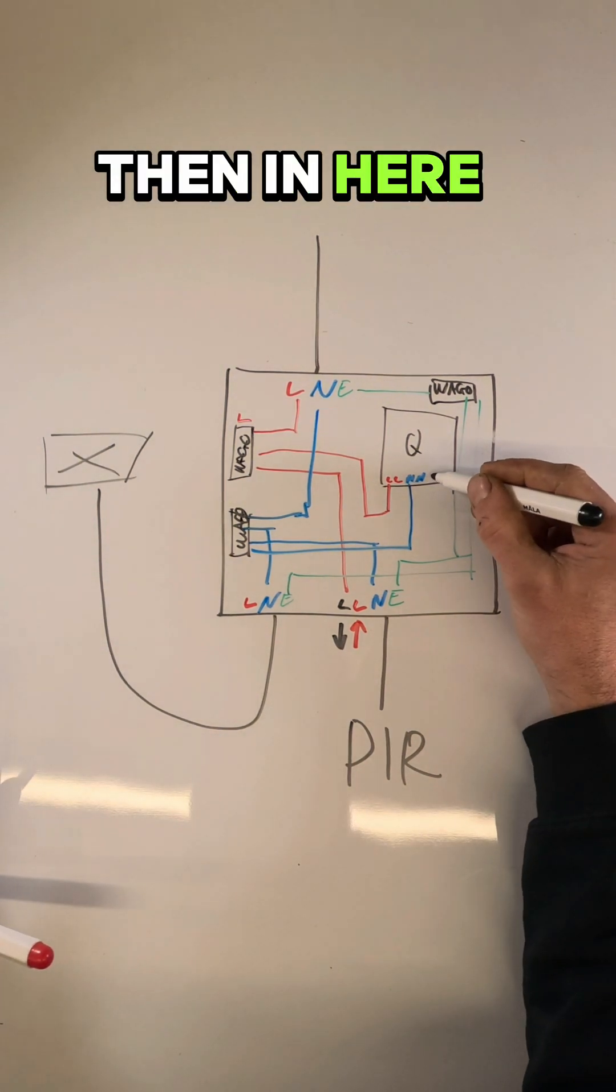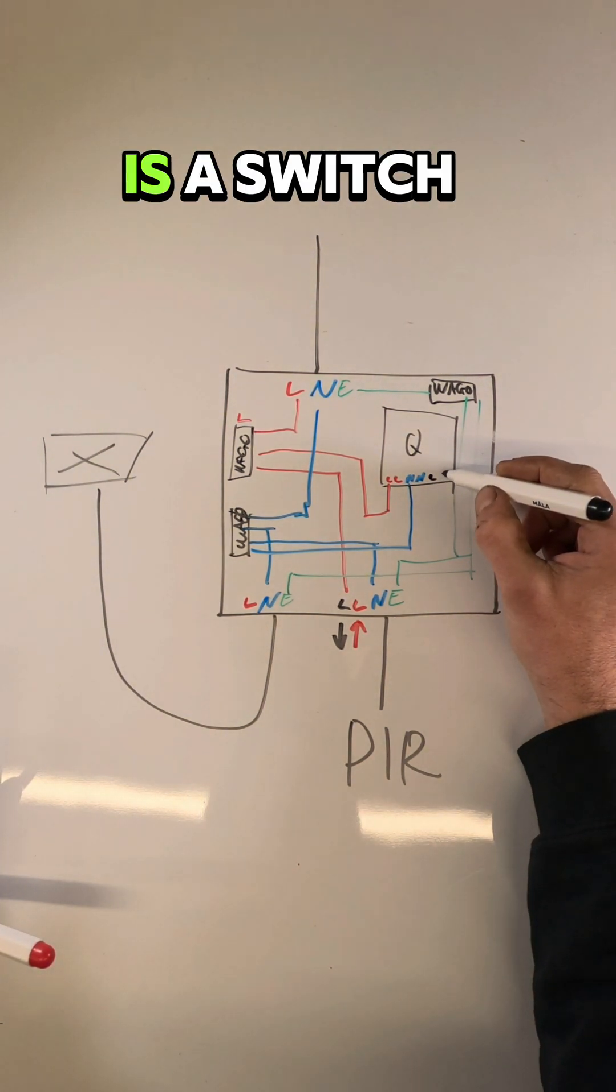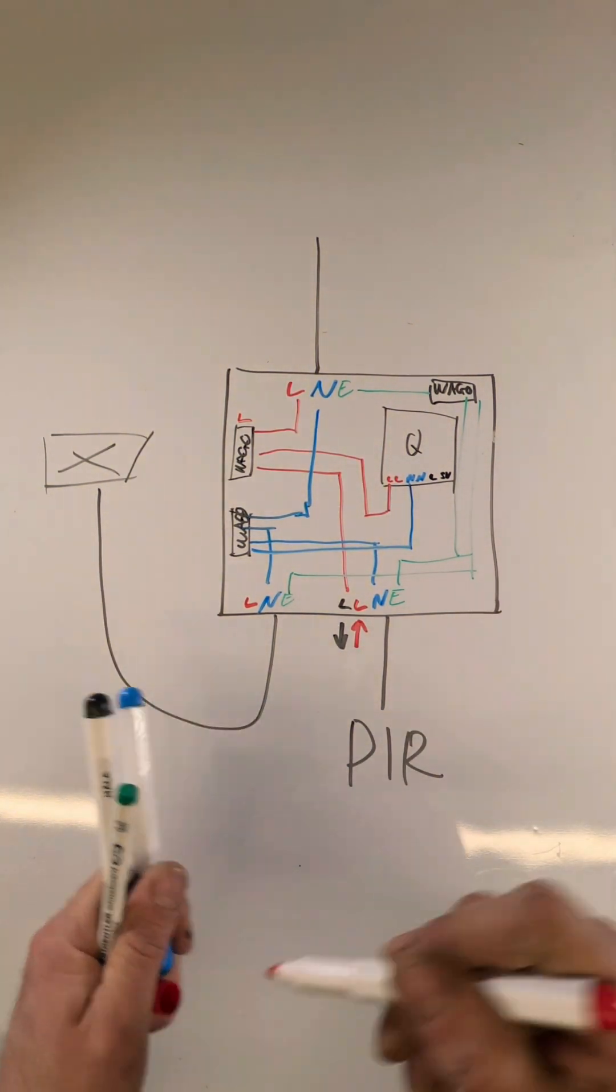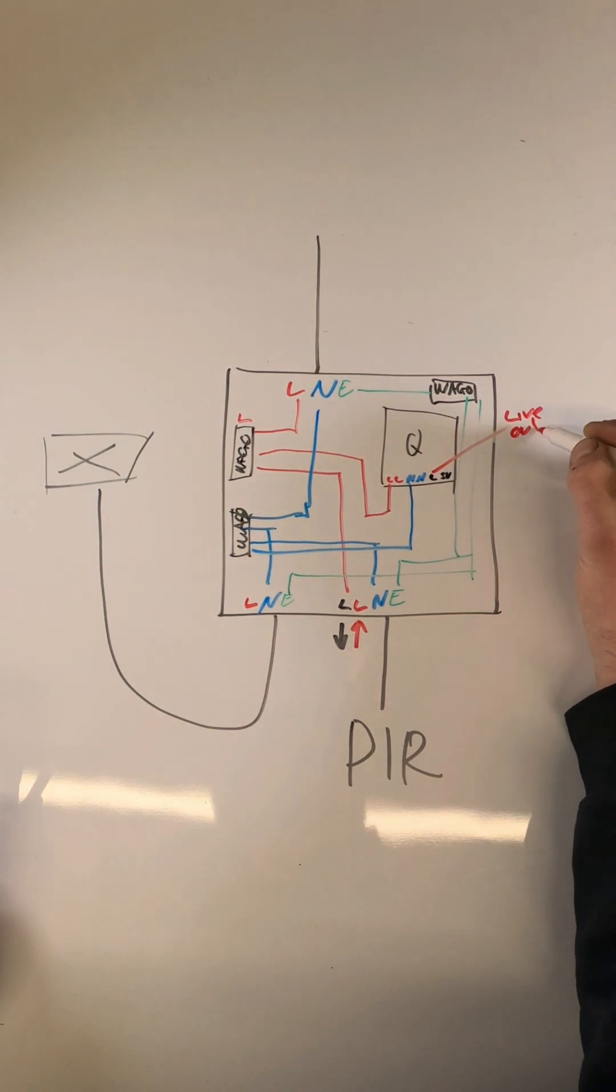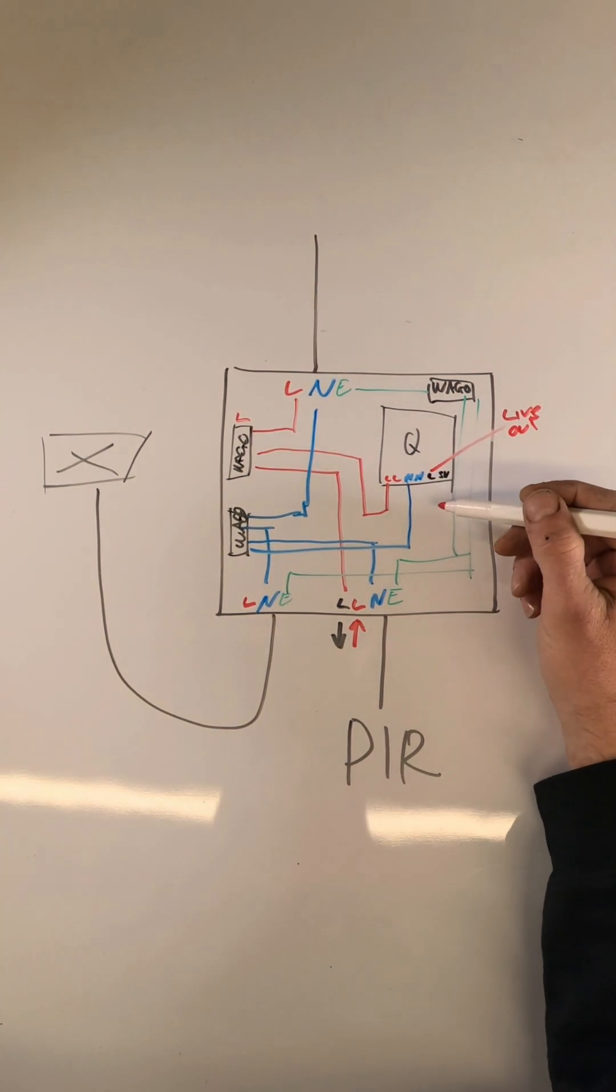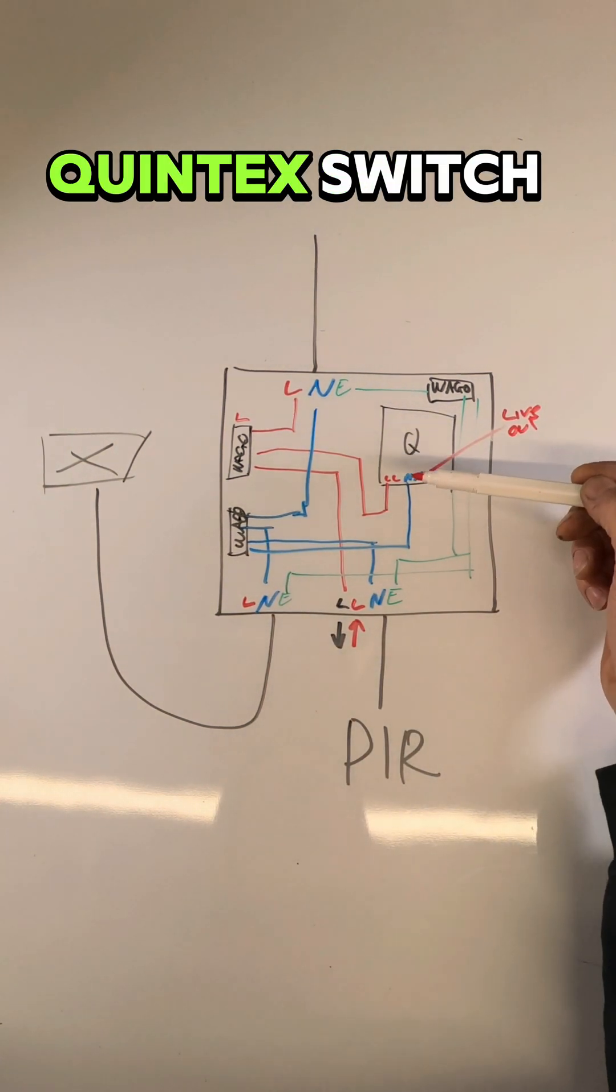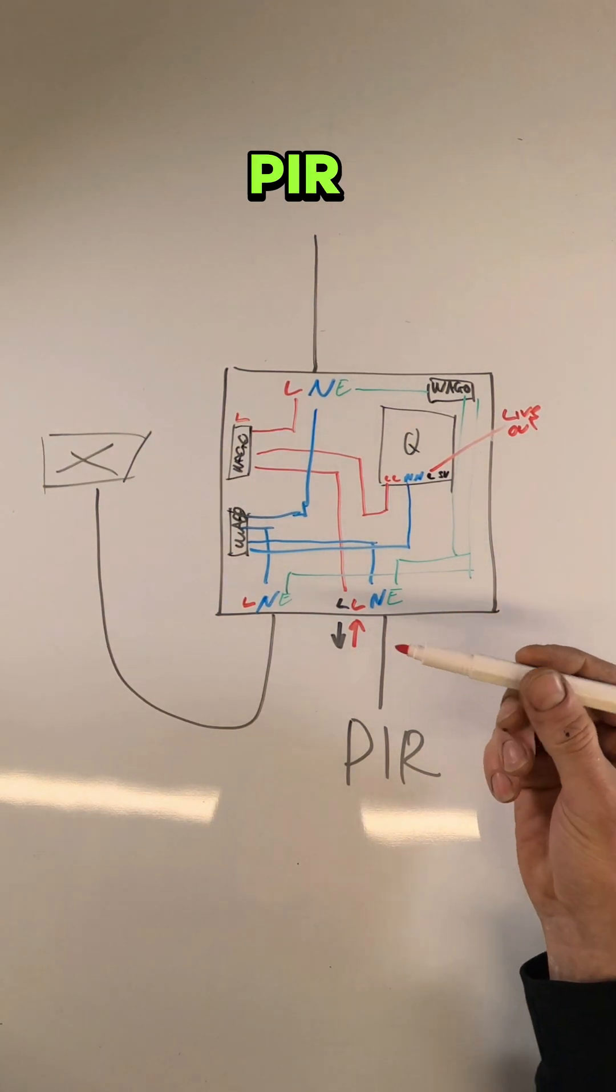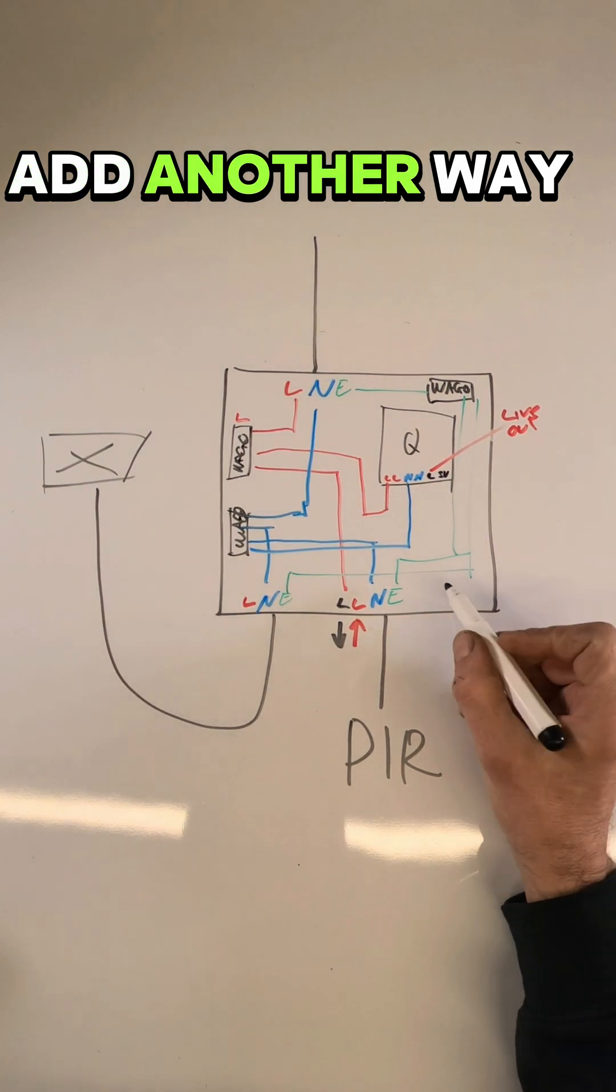Then in here, that is your live out. And then there is a switch one in there as well, but we didn't use that. So the live coming in all goes to the Wago, and then into the Quintic switch and then into PIR. Then from the out of the PIR, another Wago.